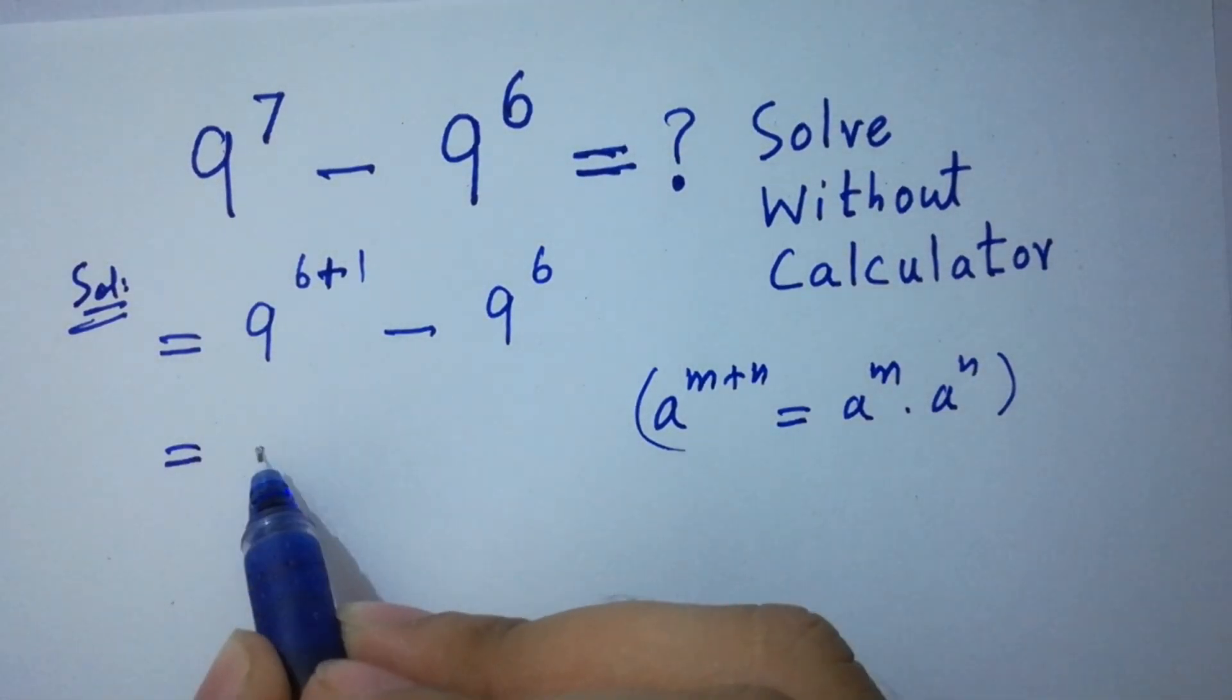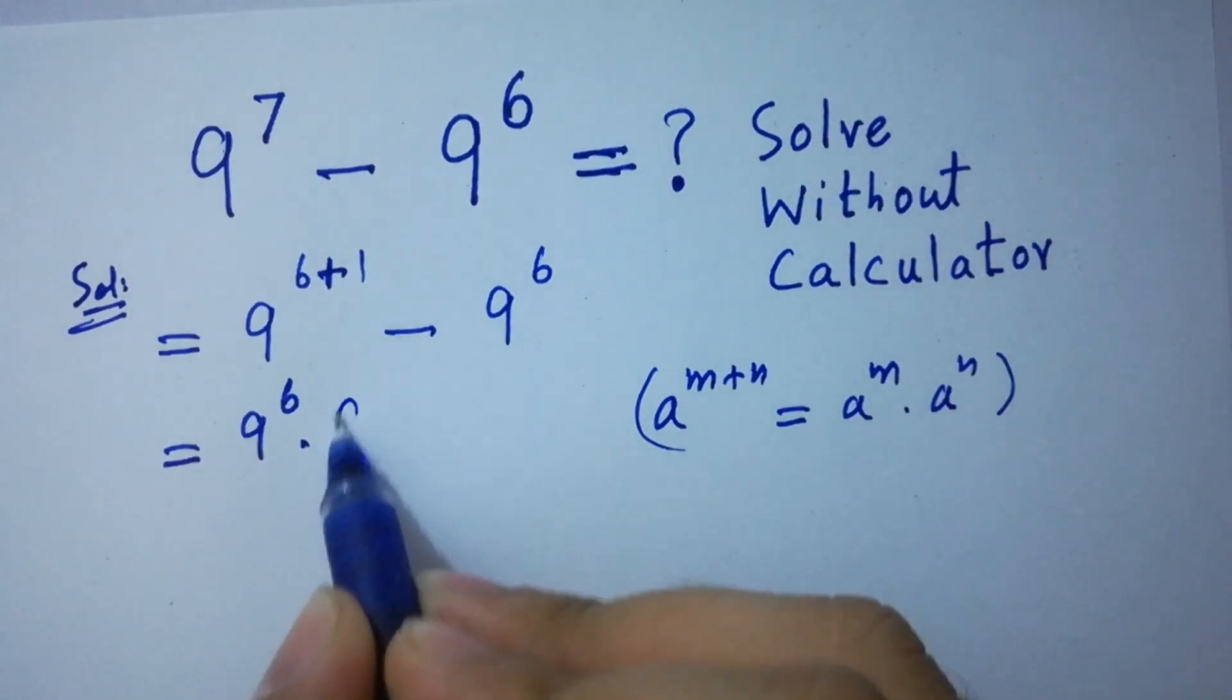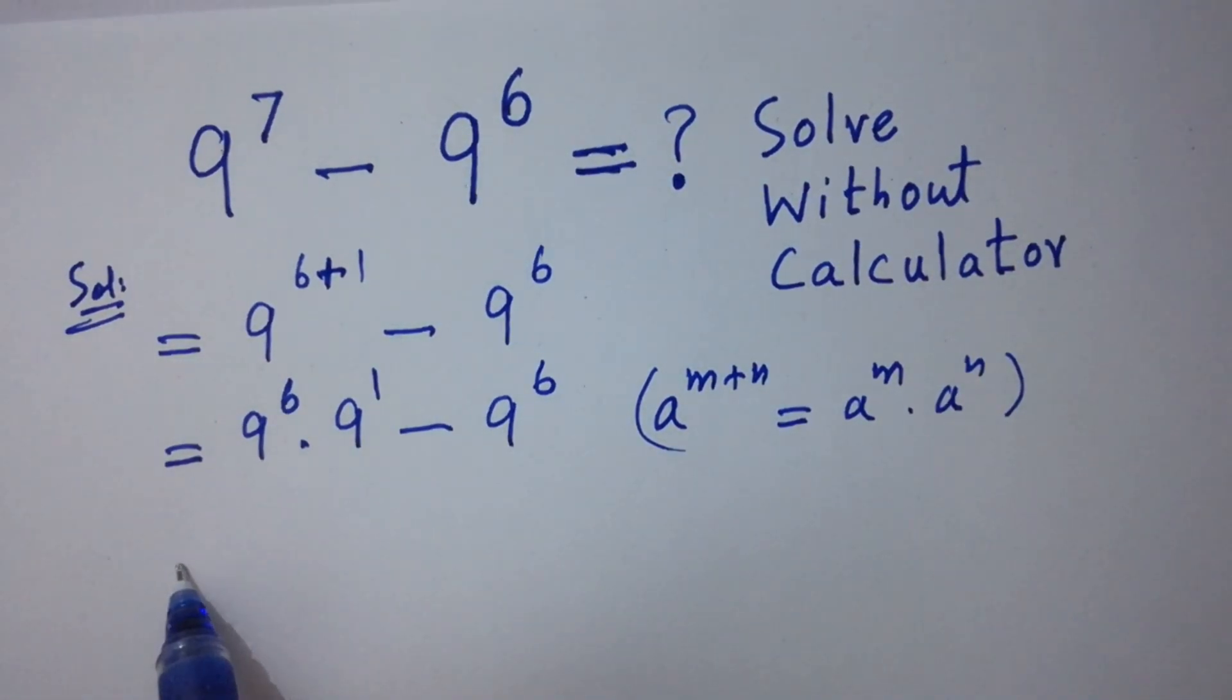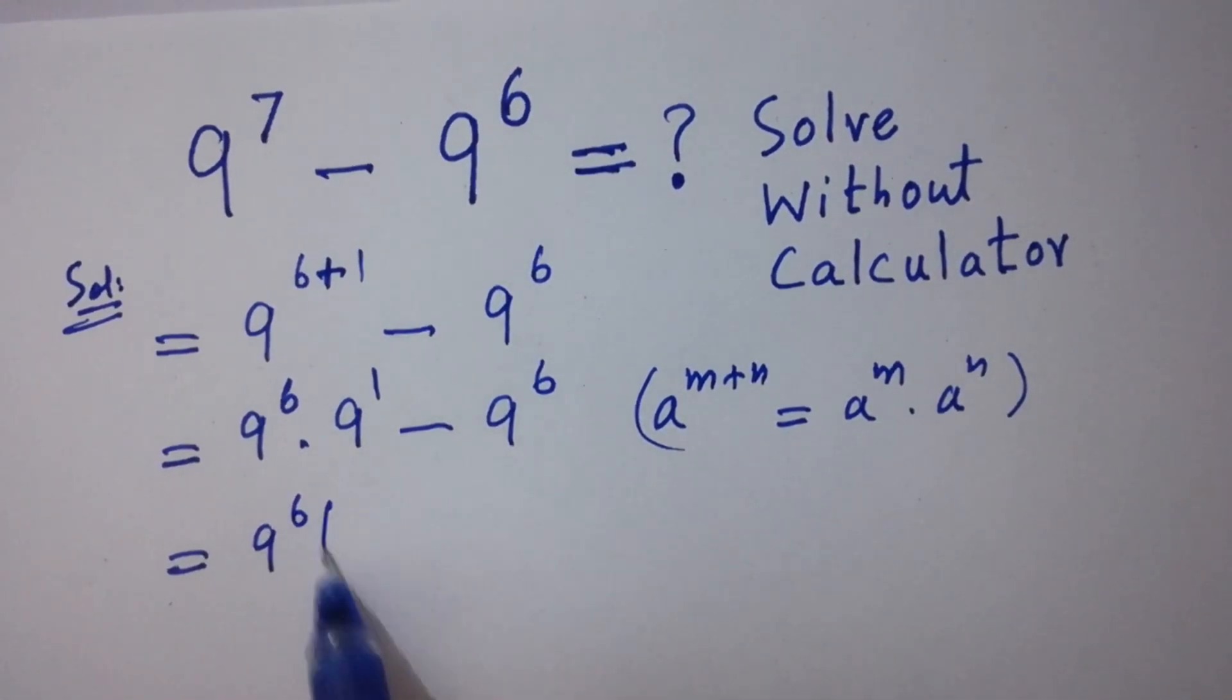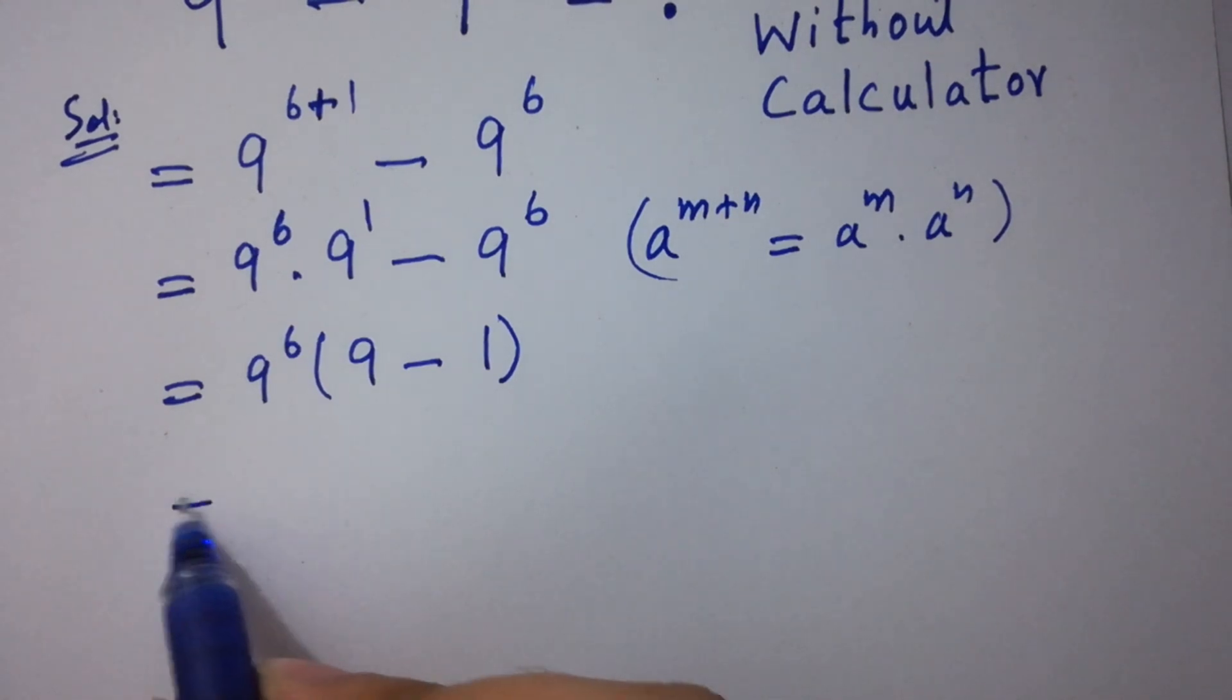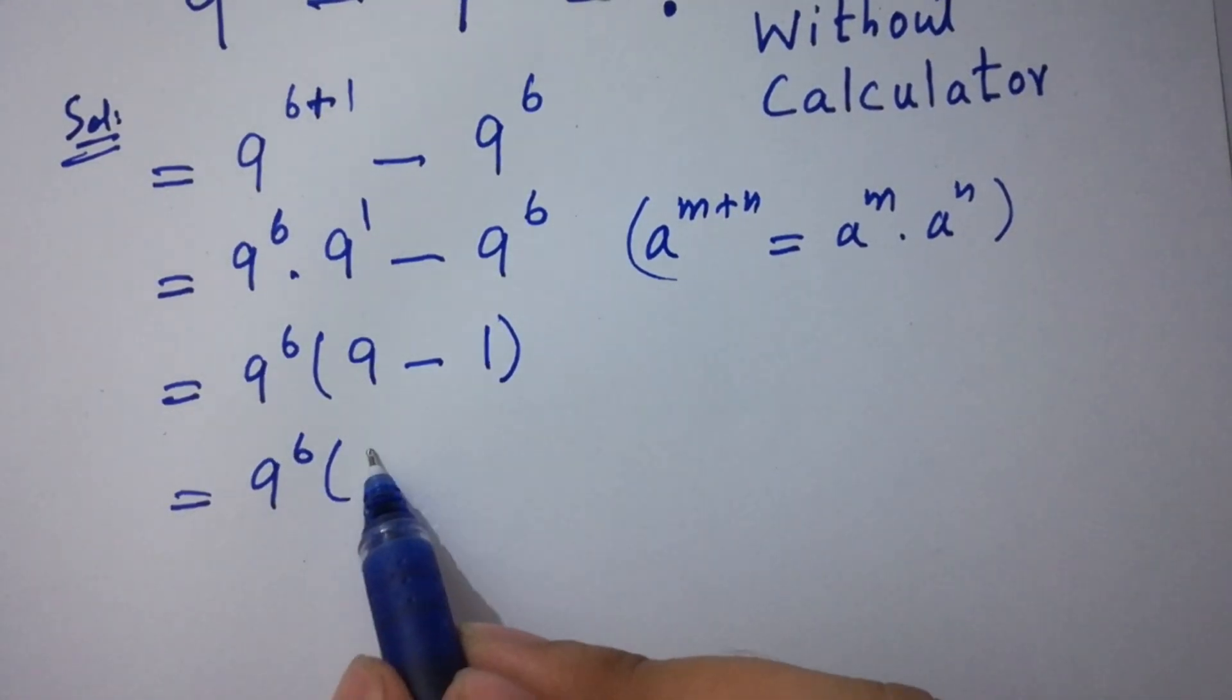Then it will be 9 to the power 6 times 9 to the power 1 minus 9 to the power 6. Here, 9 to the power 6 can be common. We have 9 to the power 6 times 9 minus 1, which is 8.